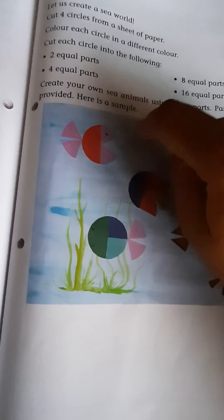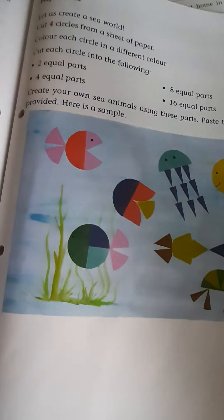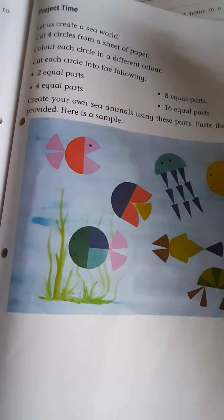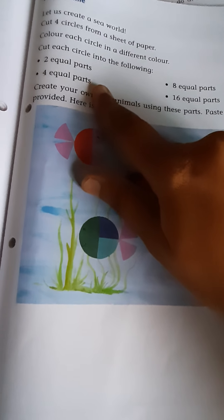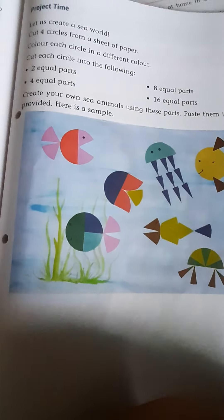You cut 4 circles now children. So in that first you have to cut one circle into 2 equal parts. And the next circle you have to cut into 4 equal parts. And third circle you have to cut into 8 equal parts. And fourth one you have to cut into 16 equal parts.